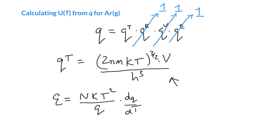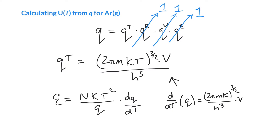We can take the derivative of this function. So dQ/dT — the things that aren't changing are 2, π, m, k, h³, and V. The only thing that's changing is the T^(3/2) term. If we take the derivative of T^(3/2), we bring the power down — so it's 3/2 times T^(1/2). And we can see that this is equal to the partition function times 3/2 divided by the temperature.